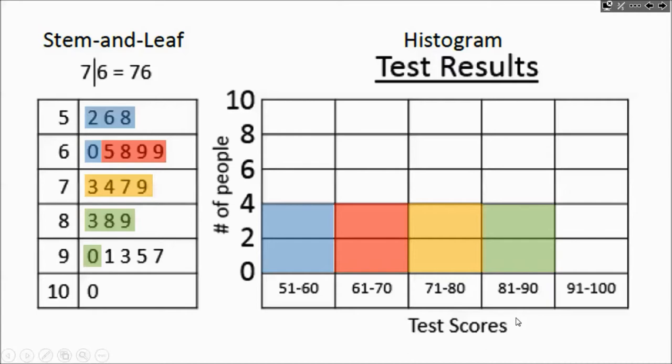Finally, we have 91 to 100. 91 to 100. That's going to be four of them here and another one here. It's a total of five. So there's your histogram filled in.